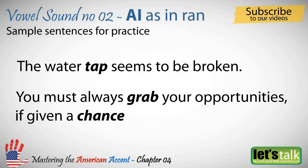Now speak those 21 words whichever way you like — as a single word or as part of a sentence. You might have tried hard speaking the words with the correct accent as demonstrated by me, but that is not enough. You are in a process of learning the accent, a process we have designed for you. So do not halt the momentum of learning that you have gained from this lesson. Practice on these words repeatedly. Keep practicing unless you feel satisfied with your own accent. I will see you again with another vowel sound in the next chapter.